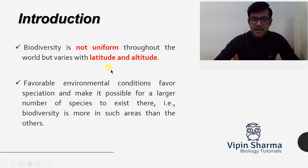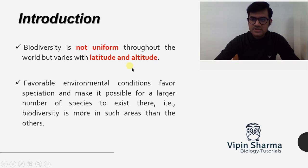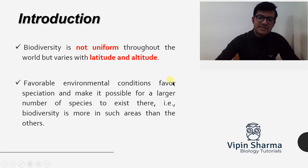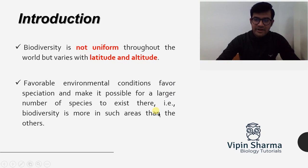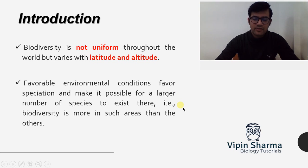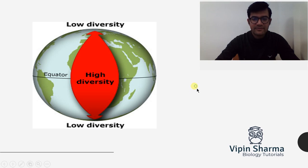As the latitudes and altitudes of different places change, the environmental conditions in those areas change. As the environmental conditions change, the habitat which it favors is different for different flora and different fauna. That's why the biodiversity levels are not uniform at different places.